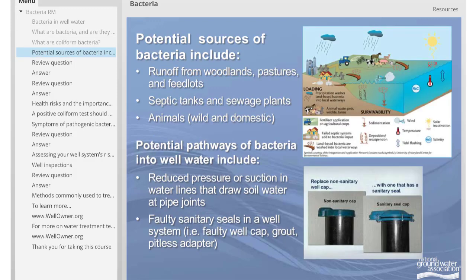Potential sources of bacteria include runoff from woodlands, pastures, and feedlots, septic tanks and sewage plants, and wild and domestic animals. Potential pathways of bacteria into well water include reduced pressure or suction in water lines that draw soil water at pipe joints, faulty sanitary seals in a well system such as a faulty well cap, grout, or pitless adapter.